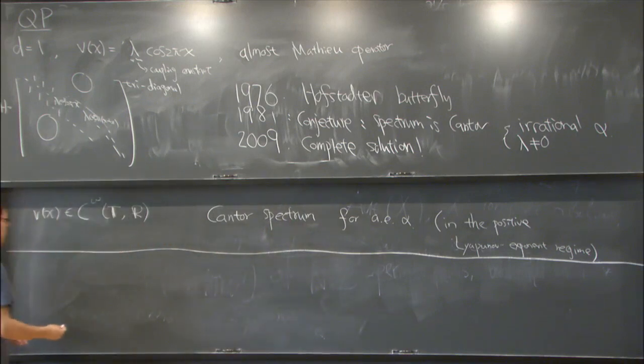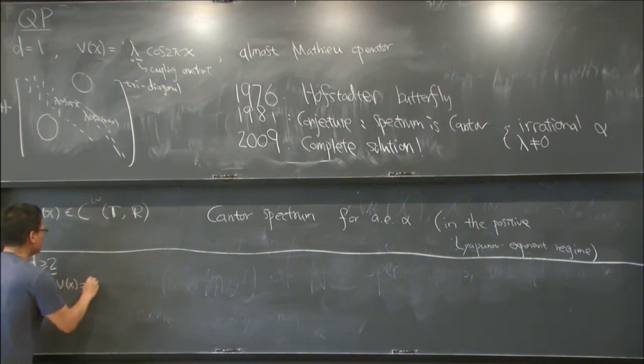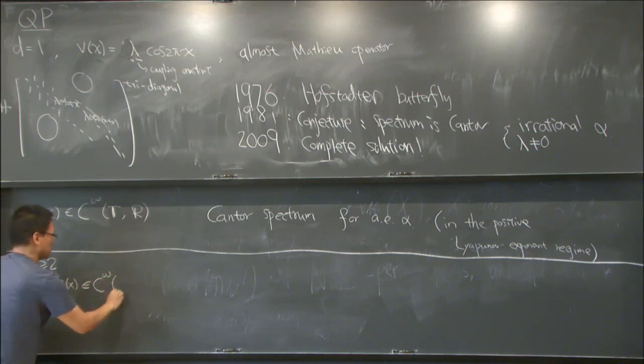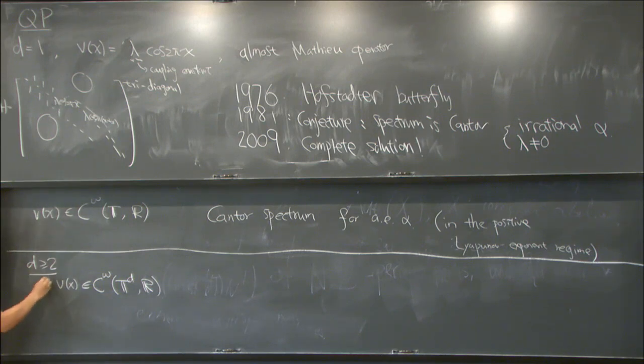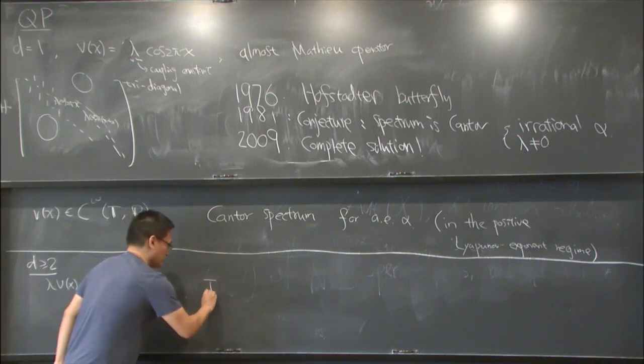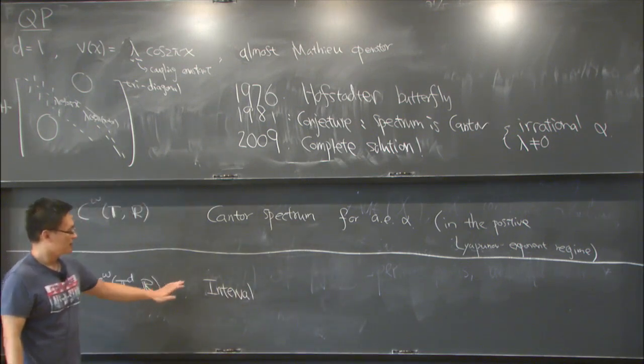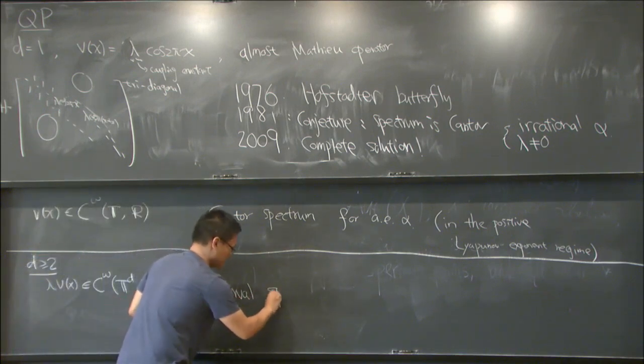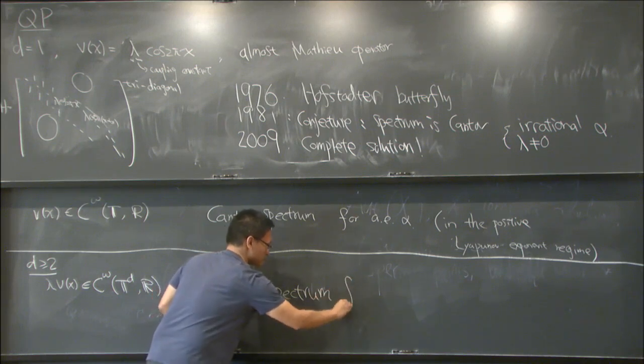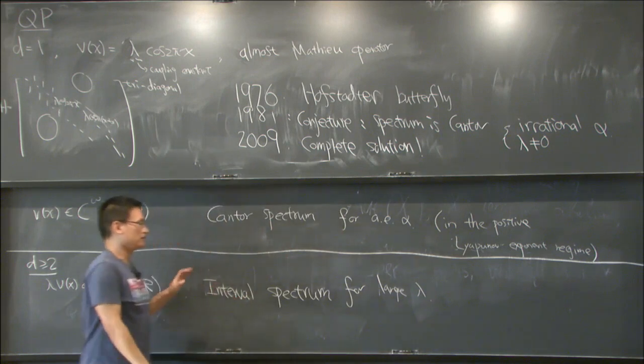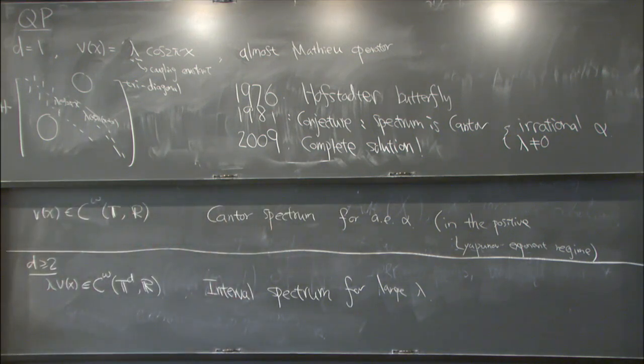Once we consider higher dimensional underlying dynamics, so for d greater or equal to 2, we have higher dimensional torus. Then it is also for analytic potential V. Let me put a coupling constant λ, just to introduce the result. So for analytic V, it has been proved very recently, like about a month ago, by Jitomirskaya, Schlag and Voda, that the spectrum will be an interval set, is a single interval for large λ. So if this order λ is larger, then one would have interval spectrum.